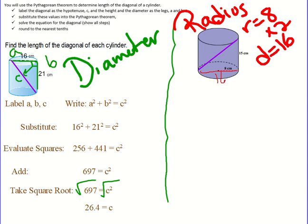Okay so from here I'm ready to use my Pythagorean Theorem. I have A squared plus B squared equals C squared. So I have to label my A, B, and C on my diagram.